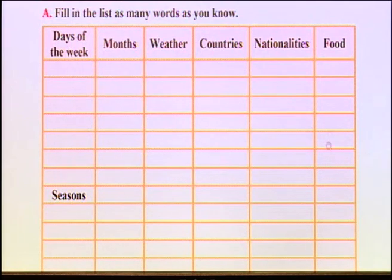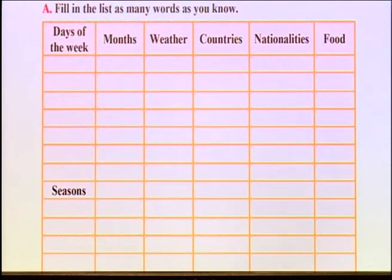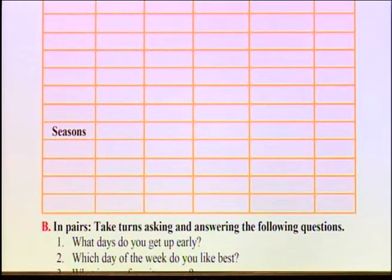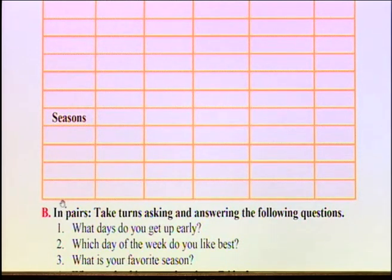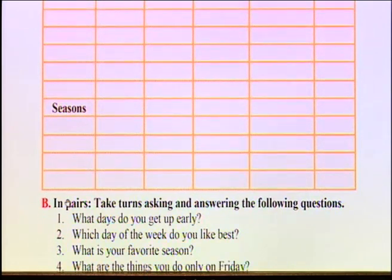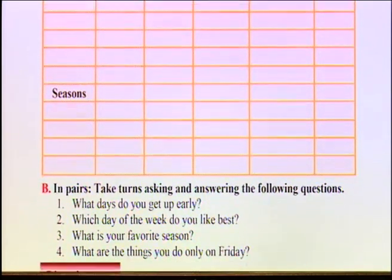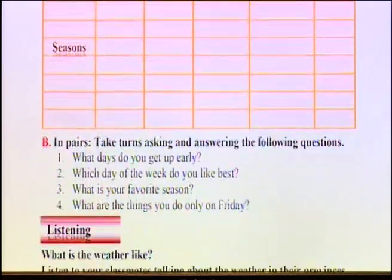Food — see how many food words you can write down. And we have one more category: Seasons — فصل‌ها. How many seasons do we have? One, two, three, four seasons. So you can write down the names of the seasons here — like spring, autumn. Write them in the blanks.